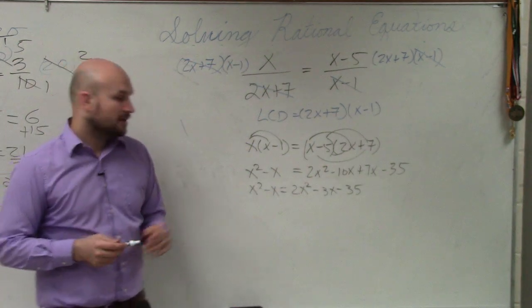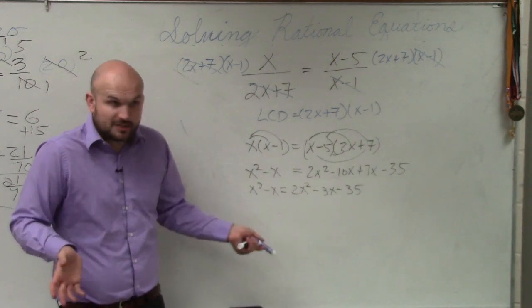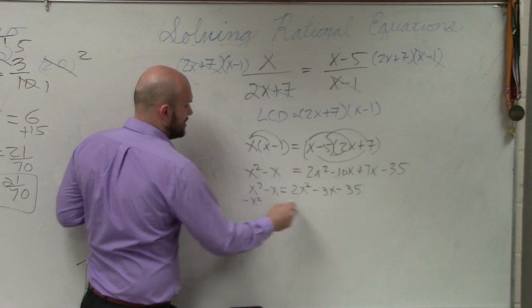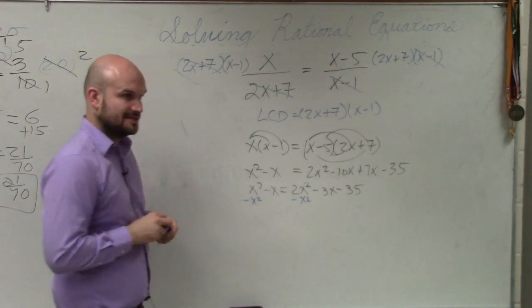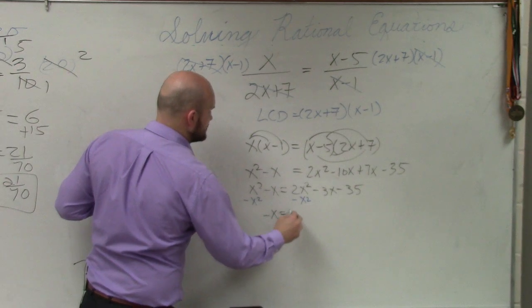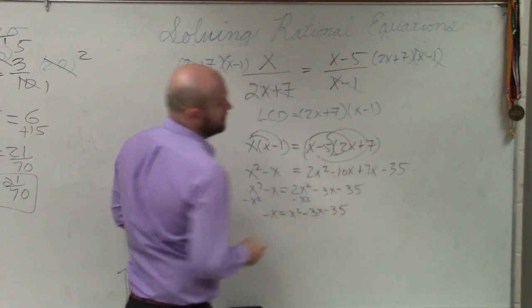Now, the first thing I want to do is, I've got to get the x squareds on the same side and the x's to the same side. So let's get rid of the x squared first. So I'll subtract an x squared on both sides. OK. So now I'm left with a negative x equals x squared minus 3x minus 35. Do you follow me?